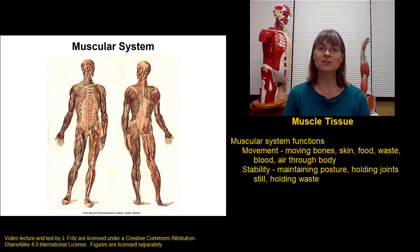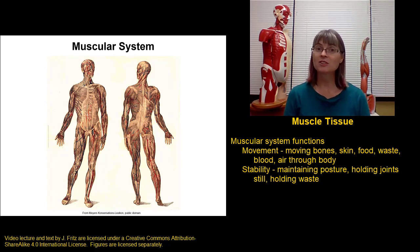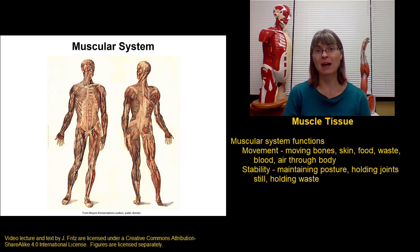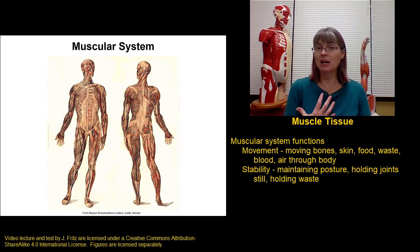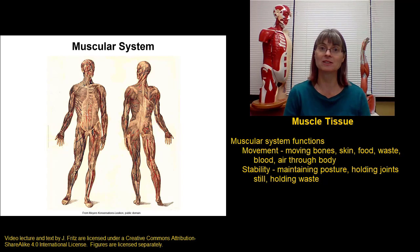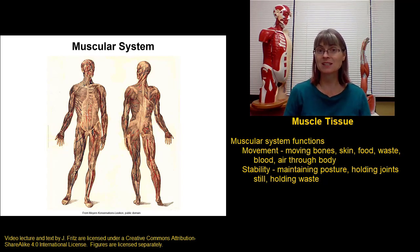The muscular system is also important for stability, or preventing movement. We have sphincters of smooth muscle that prevent waste from exiting the body when we're not ready for that. And we have muscles that help maintain our posture so we can remain upright and still when performing other activities, and muscles that hold joints still when we don't want them to move.